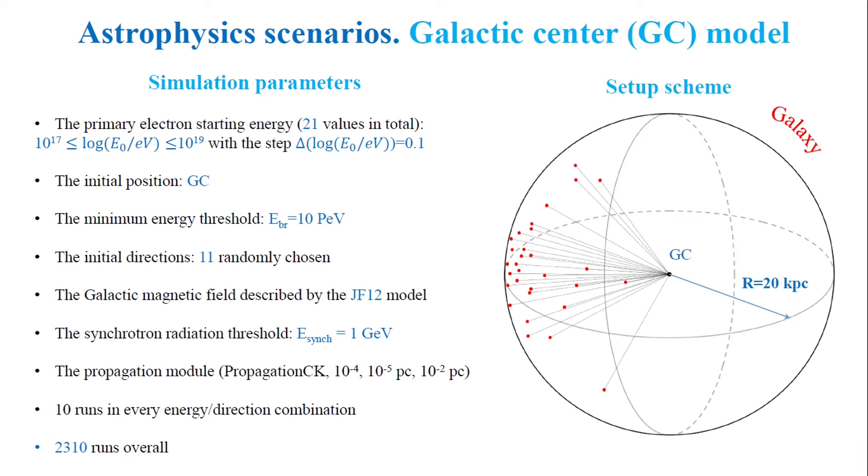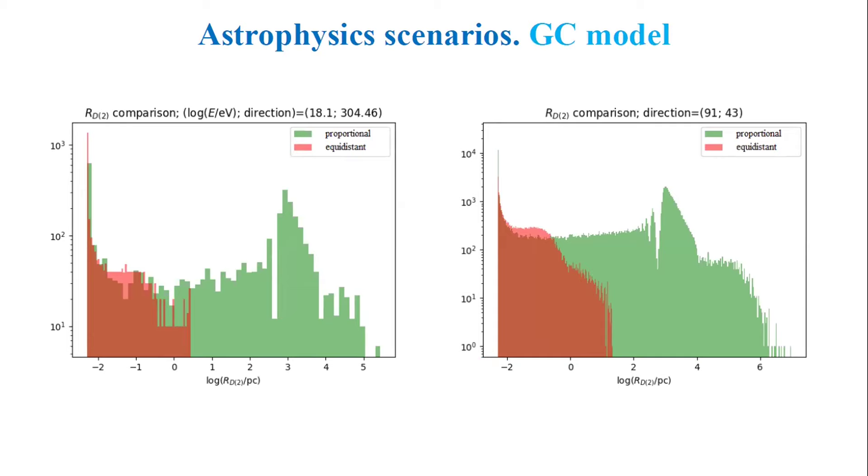Equipped with this tool, I analyzed two astrophysics scenarios. One corresponds to a galactic center as a source of high-energy electrons. For this simulation, I did some Monte Carlo using randomly chosen directions from the galactic center. I produced more than 2,000 runs.